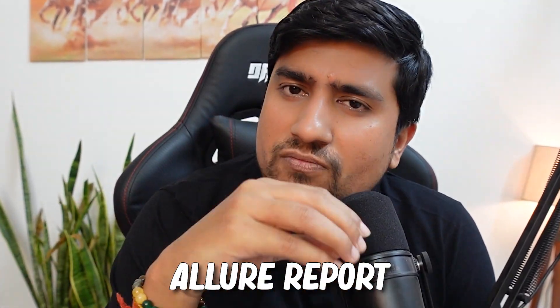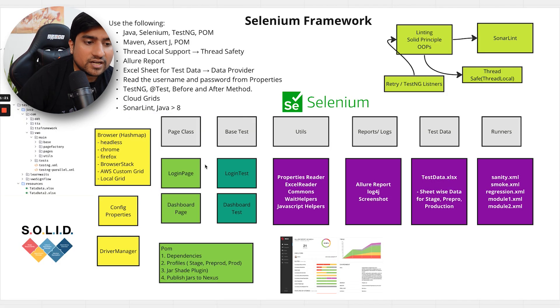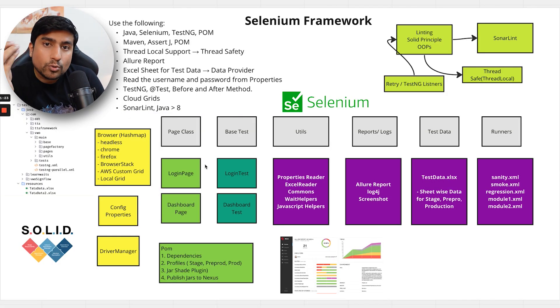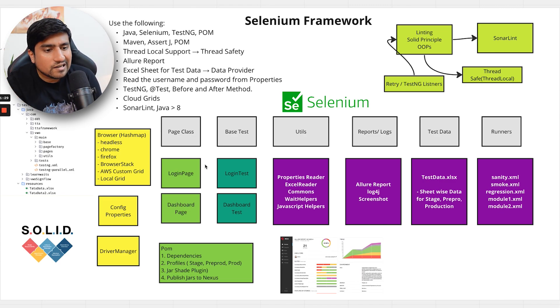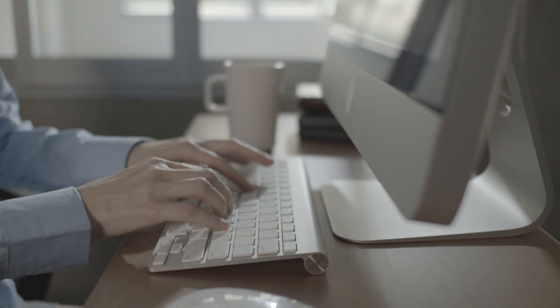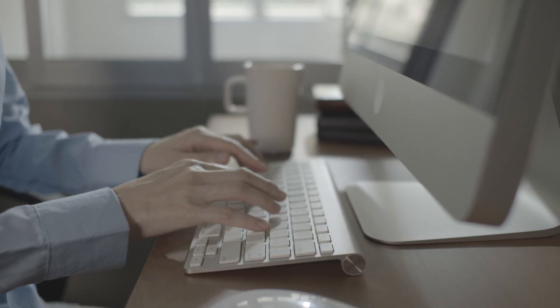For the reporting mechanism, we will be focusing on Allure Report — I think it is one of the best reports in the market right now — or you can create a custom report also. We use TestNG before-and-after methods, and cloud grid support is super important. This framework supports headless mode, Chrome, and Firefox. If you want to run it on BrowserStack or AWS, you can run it directly. The Config Manager and Driver Manager handle thread safety using ThreadLocal properly, so all test cases running in parallel go to a separate instance, and there is no problem running parallel test cases.